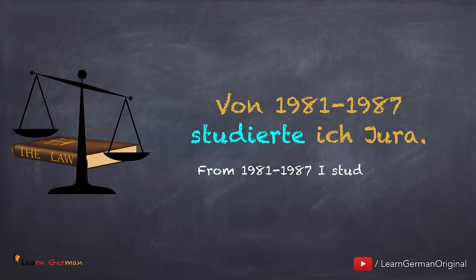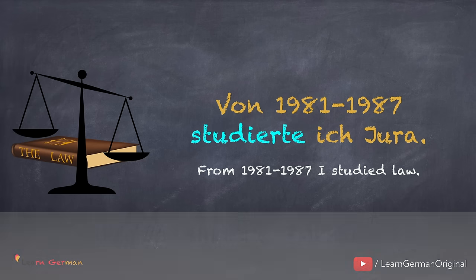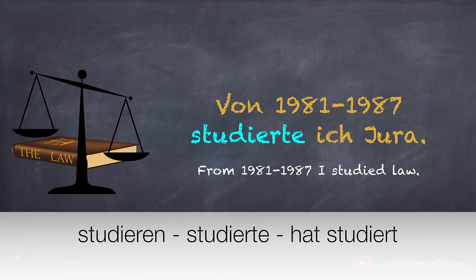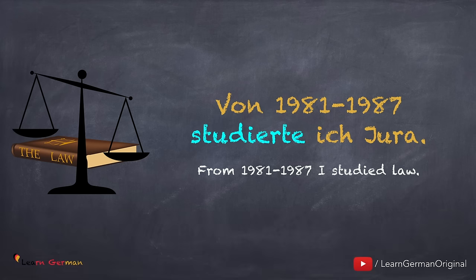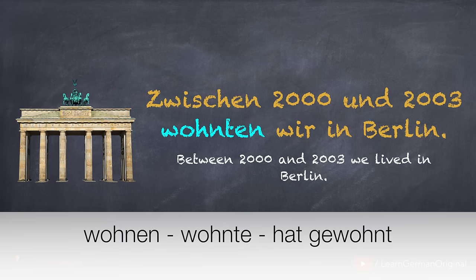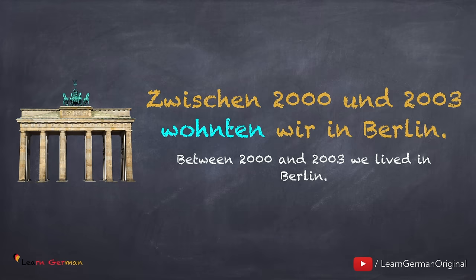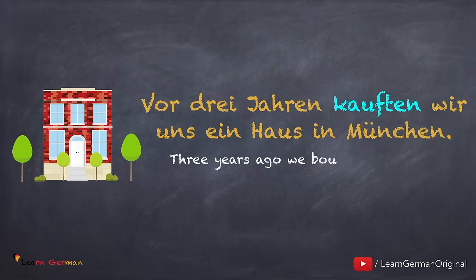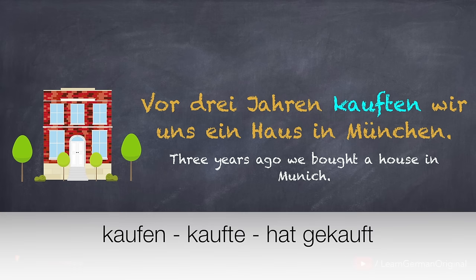Von 1981 bis 1987 studierte ich Jura. Studieren, studierte, hat studiert. Zwischen 2000 und 2003 wohnten wir in Berlin. Wohnen, wohnte, hat gewohnt. Vor drei Jahren kauften wir uns ein Haus in München. Kaufen, kaufte, hat gekauft.